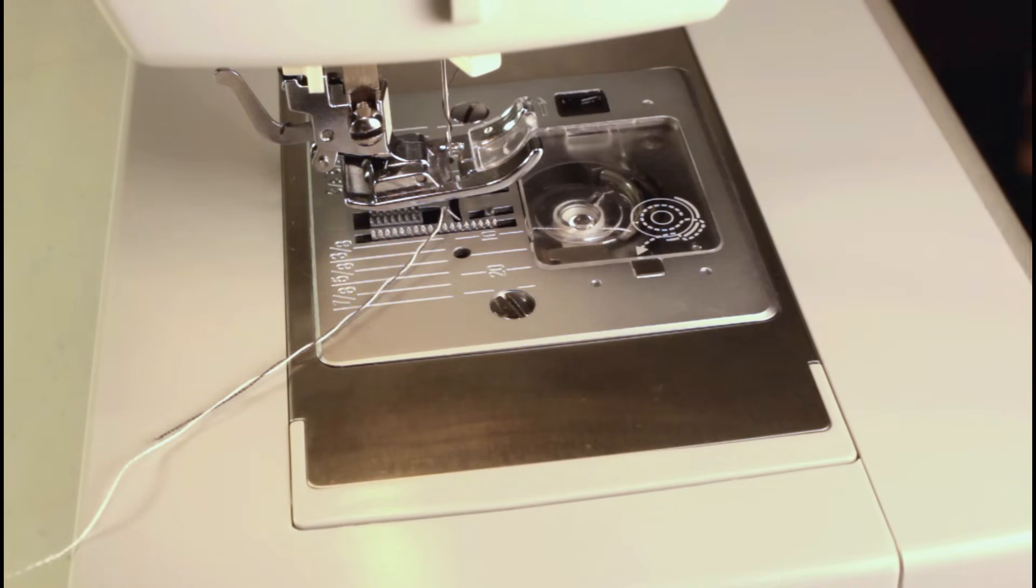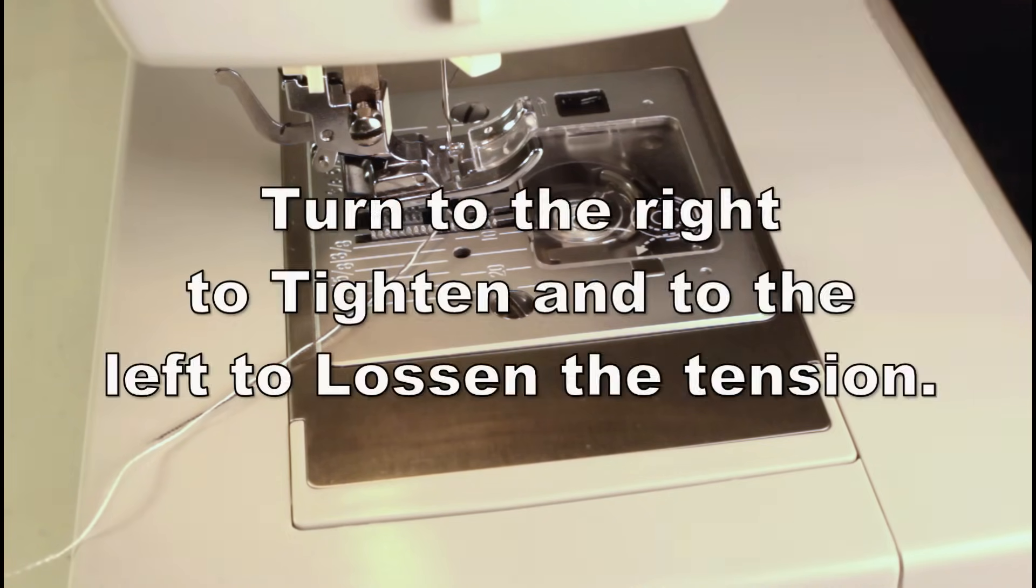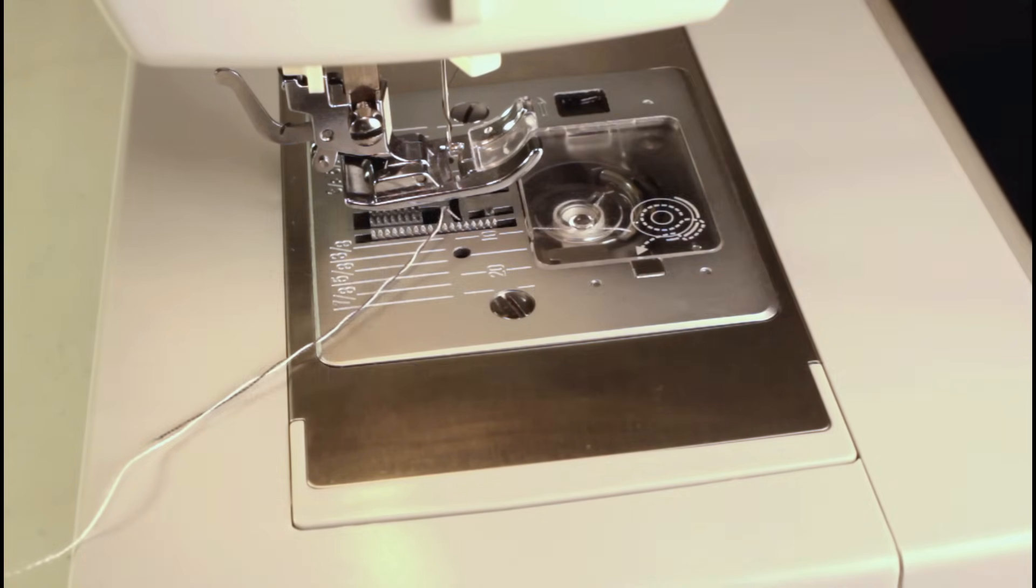Hopefully that will give you an idea of how to adjust the tension in the bobbin case. Just turn it a quarter. If it's way off, you can go ahead and turn it about a half turn. But, generally about a quarter at a time. Insert it back in, test, and repeat until you get, again, the tension that I just described.